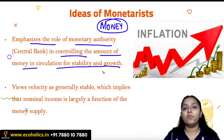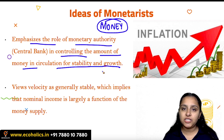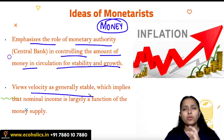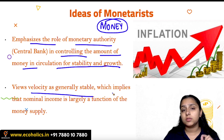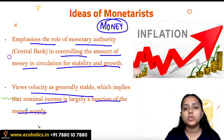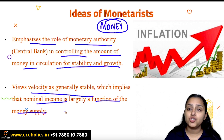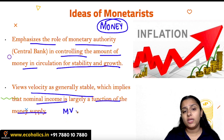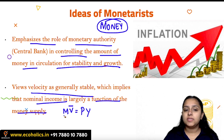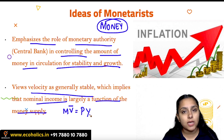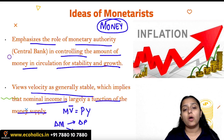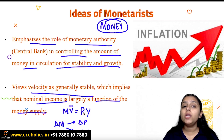When money is supplied in the economy, there is a term called velocity — the circulation of that money. According to monetarists, velocity is generally stable, which implies that nominal income is largely a function of money supply. We express this through the equation of exchange: M × V = P × Y. If velocity is constant, then any change in money supply will affect either prices or output.